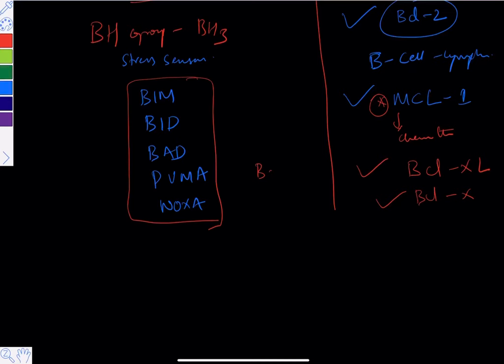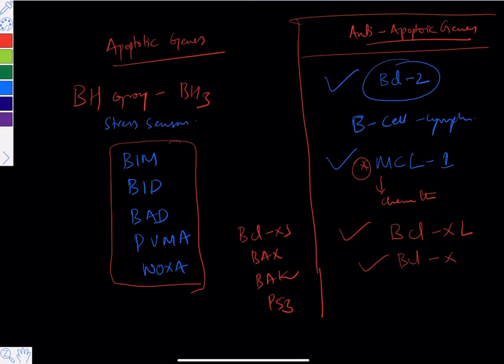Other important pro-apoptotic genes to note are BCLxS, BAX, BAK, and p53. There is some controversy in some areas, but most exam questions can be handled with these examples. Questions are regularly asked like 'all of the following belong to apoptotic genes except...'